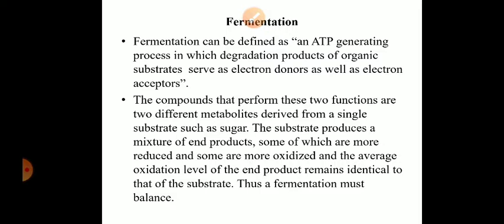The compounds that perform these two functions — electron donor as well as electron acceptor — are two different metabolites derived from a single substrate like sugar. The substrate produces a mixture of end products, some of which are reduced and some are oxidized, and the average oxidation level of the end products remains identical to that of the substrate. Thus, fermentation is a balance, meaning that the substrate and the products have the same oxidation level.